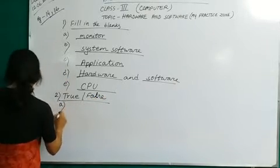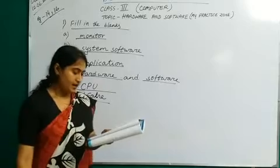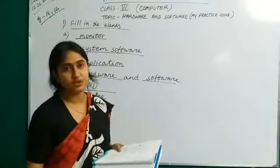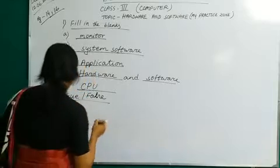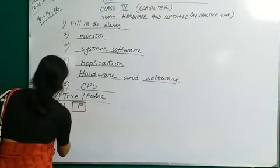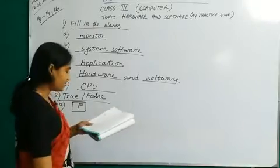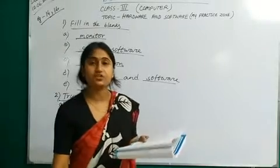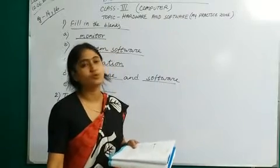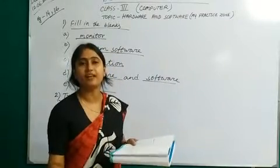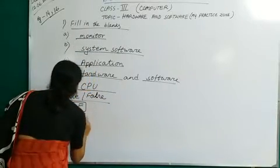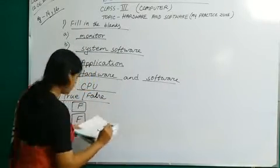Number A: A mouse is an output device. Mouse is an output device? No — mouse is an input device. So it is false. Number B: You can see, feel and touch software. We cannot see, we cannot feel, and we cannot touch software. So it is also false.